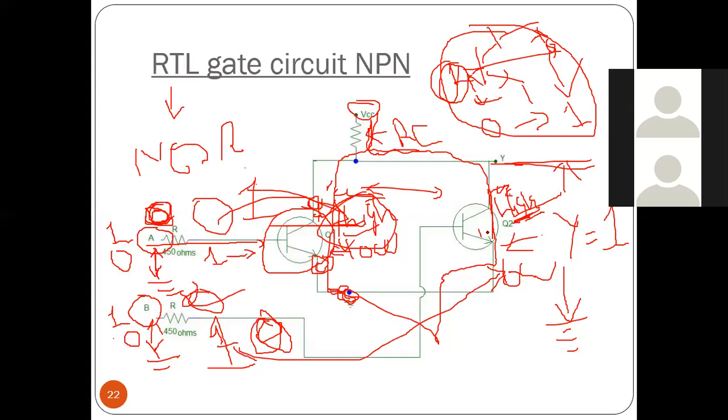So either Q1 is on or Q2 is on, your output will be 0. If both A and B are 1, Q1 will be on and Q2 will be on. Then also your output will be 0 because current will be flowing through that and will be grounded. There will be short circuit between collector and emitter, so your output will be 0 at that time.